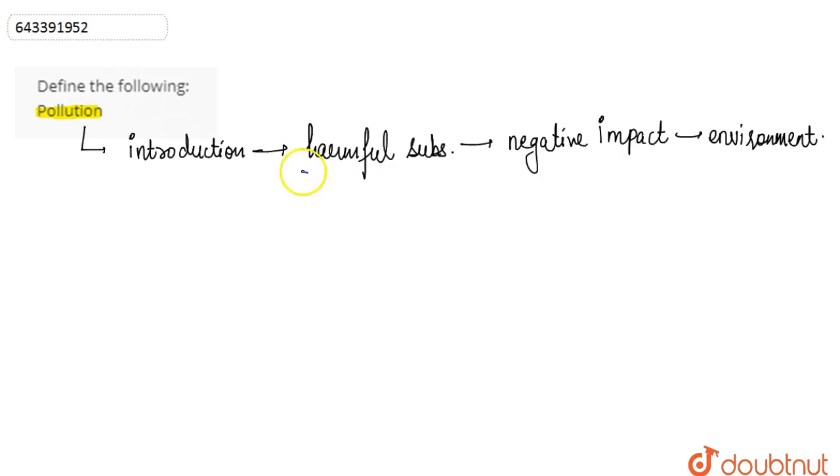When any harmful substance, which is called the pollutant, has a negative impact and is introduced into the environment, then the condition is known as pollution.